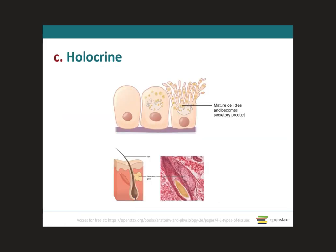In contrast to the apocrine type that accumulates secretory products in the apical portion of the cell, holocrine glands accumulate their secretory products in the cytosol. As the secretory products mature, they rupture the cell, and the cell itself becomes the secretory product. Because the cell ruptures, the secretion consists of a considerable amount of lipids from the plasma membrane and intercellular membrane. These dying cells are replaced by new cells. One example of a holocrine gland is the sebaceous gland of the skin, which we will cover in the next module.